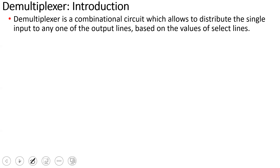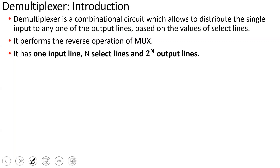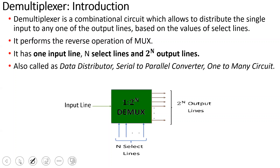So DEMUX performs a reverse operation of MUX. It has one input line, N select lines, and 2-to-the-power-N output lines. DEMUX is also called a data distributor, serial to parallel converter, or one-to-many circuit.